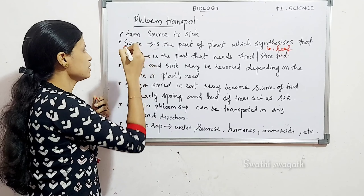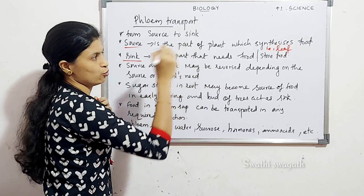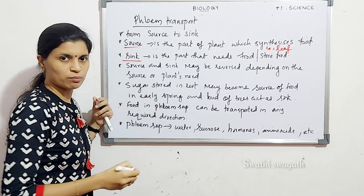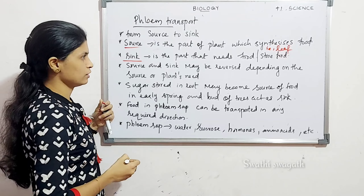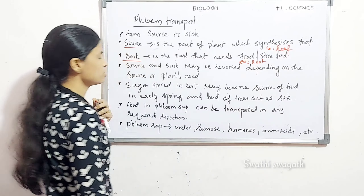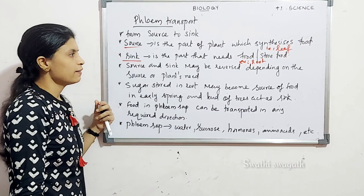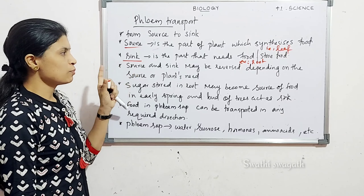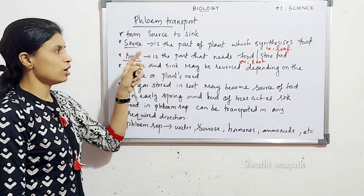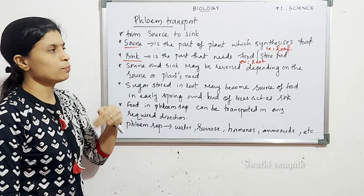And sink — what does sink mean? It is the part that needs food or stores food. Food store is the part of the sink. For example, the root is an example of a sink because the root stores food. Source and sink may be reversed depending on the plant's need — normally source is the leaf and sink is the root.